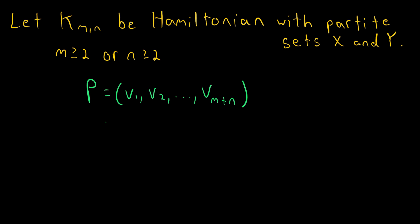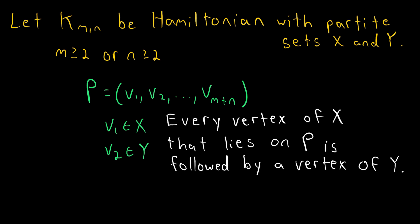Now, without loss of generality, let's say the first vertex is in the partite set X. Then, of course, it must be that the next vertex, v_2, is an element of the partite set Y, because every edge in a bipartite graph joins vertices from different partite sets. So it must be that every vertex of the partite set X that lies on the path P is followed by a vertex in the partite set Y. I'll say that one more time. Every vertex of the partite set X that lies on our path must be followed by a vertex of Y, since this is a bipartite graph.